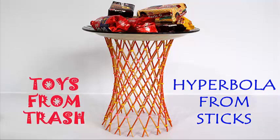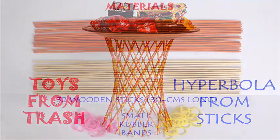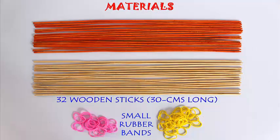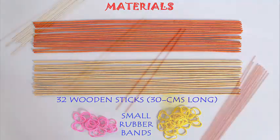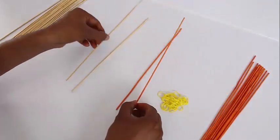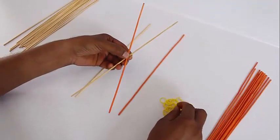In this program we are going to make a hyperbola from straight sticks. You need 32 wooden sticks, all 30 cm long and good quality rubber bands.